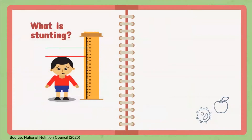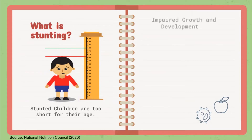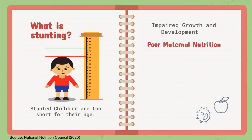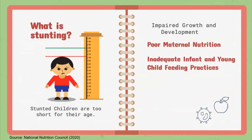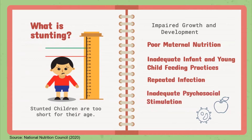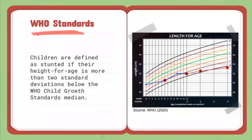So, what is stunting? Stunting, or being too short for one's age, indicates undernutrition in a child who is not receiving enough nutrition to grow and develop to reach his or her full potential. It is a condition of impaired growth and development caused by poor maternal nutrition, inadequate infant and young child feeding practices such as inadequate exclusive breastfeeding initiation and complementary feeding, repeated infection which may be due to unsanitary conditions and food preparation, especially in low-income areas, and inadequate psychosocial stimulation or opportunities to exercise, play, and learn. Stunted children are classified so by the WHO growth chart when a child's height for age is more than two standard deviations from the median.